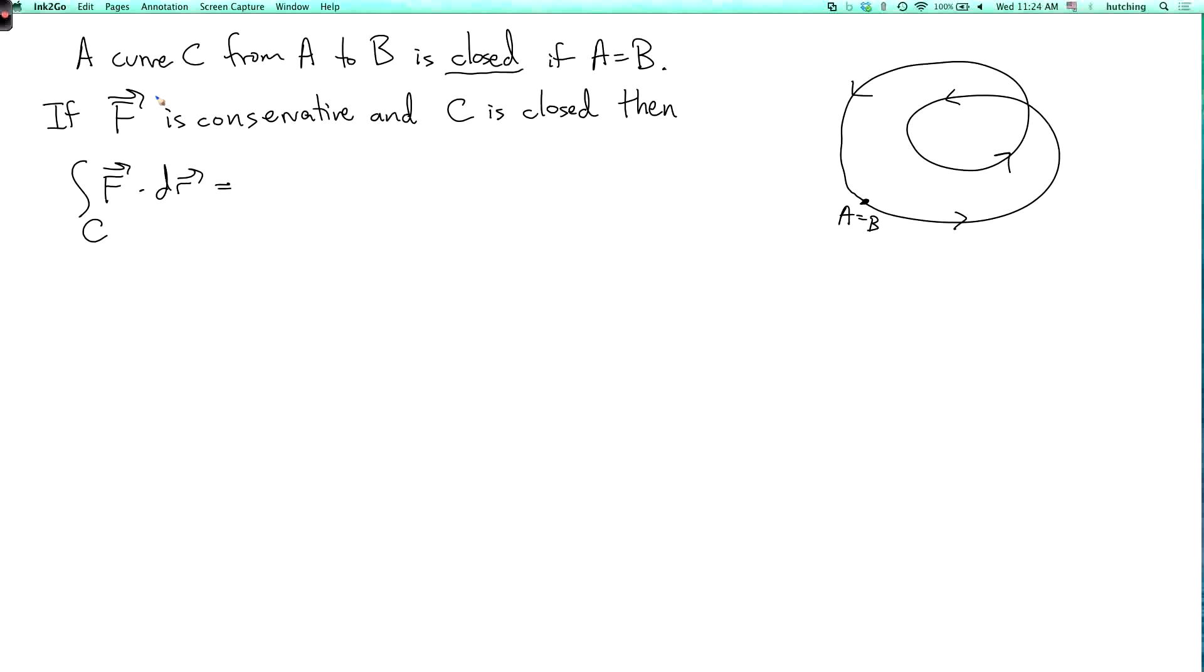Conservative means that F is the gradient of something, so let's say a lowercase f. So then the fundamental theorem of line integrals tells us that the integral over C of F dot dr is little f of B minus little f of A. But since A equals B, this is zero. So the integral of F around the closed curve is zero.